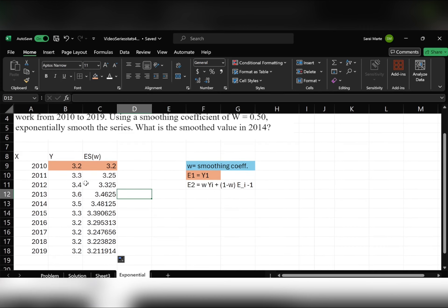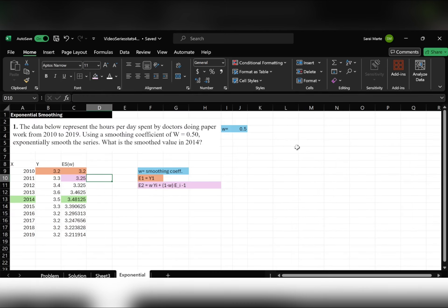They're asking me, what is the smooth value in 2014? Well, in 2014, the smooth value is 3.48125. And it's as easy as that. See you in the next video.